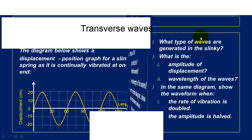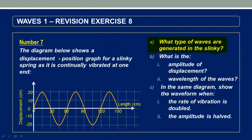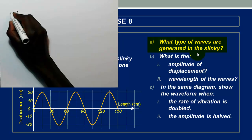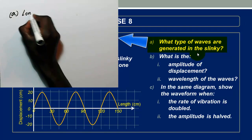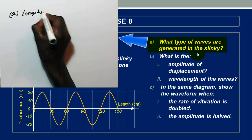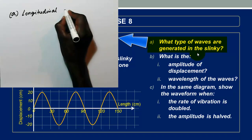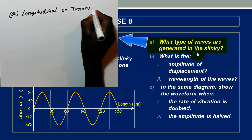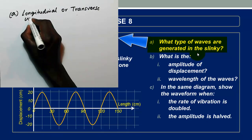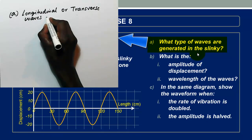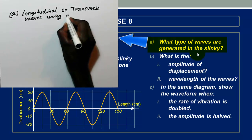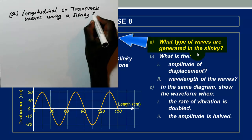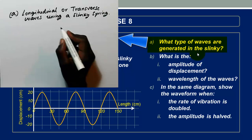Going back to the question, in part A we were asked what type of waves are generated in the slinky. The answer is that we can generate both longitudinal and transverse waves using a slinky spring.